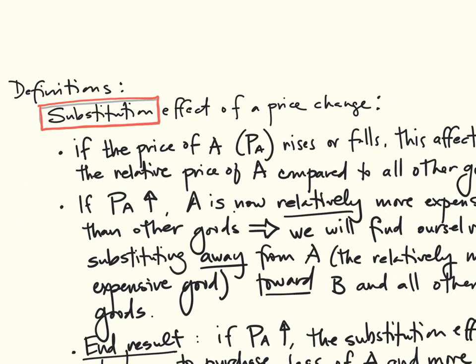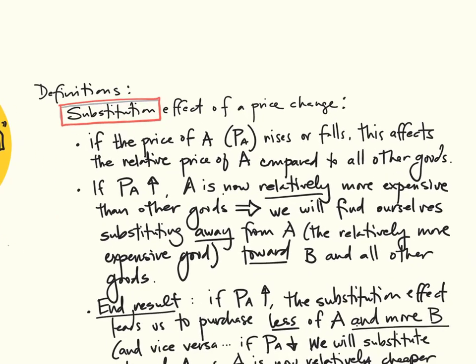We're always talking about a price change, so the substitution effect of a price change goes a little something like this. The price of A rises or falls, how does this affect everything? Well, it affects the relative price of A compared to all other goods.